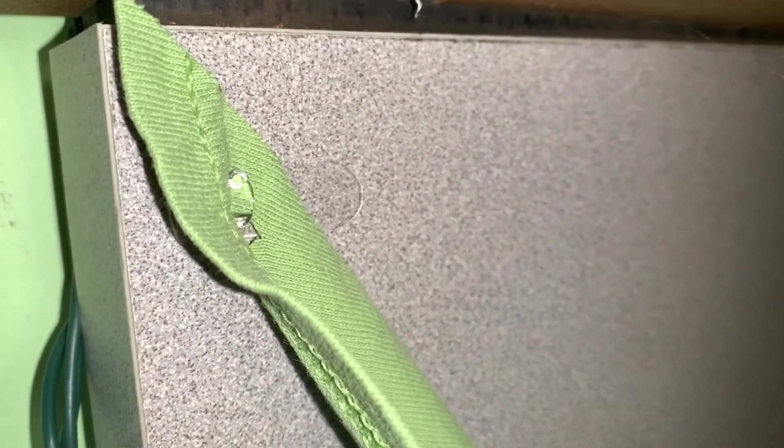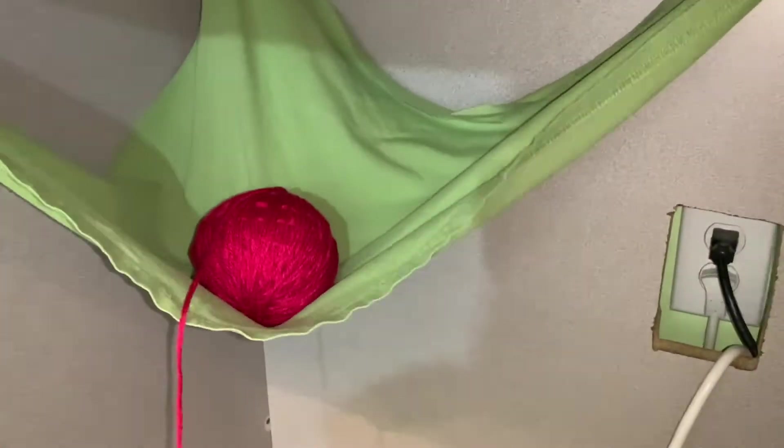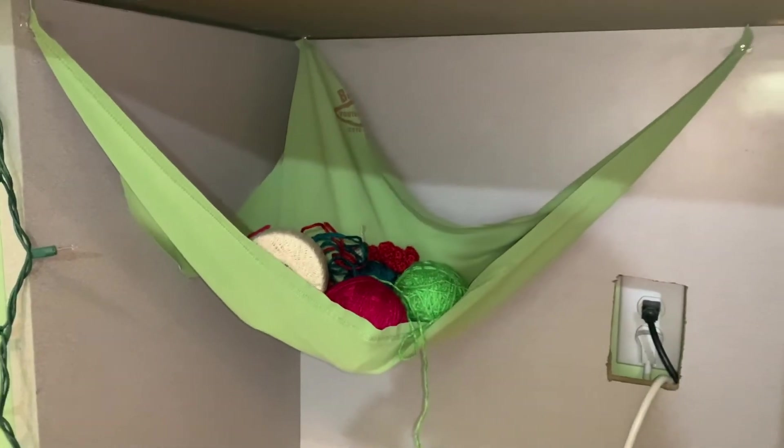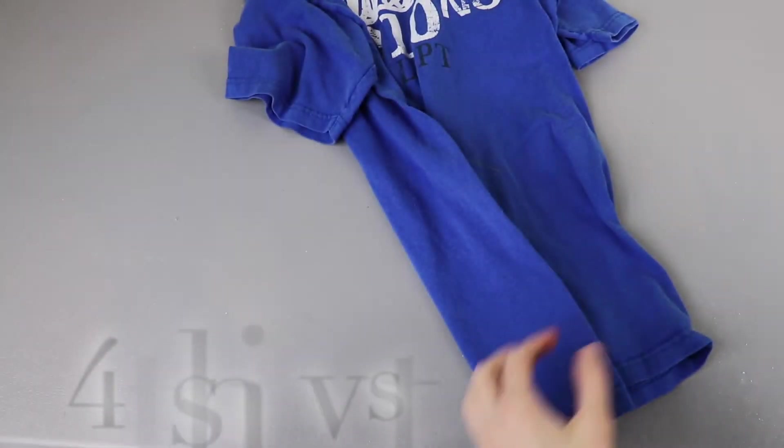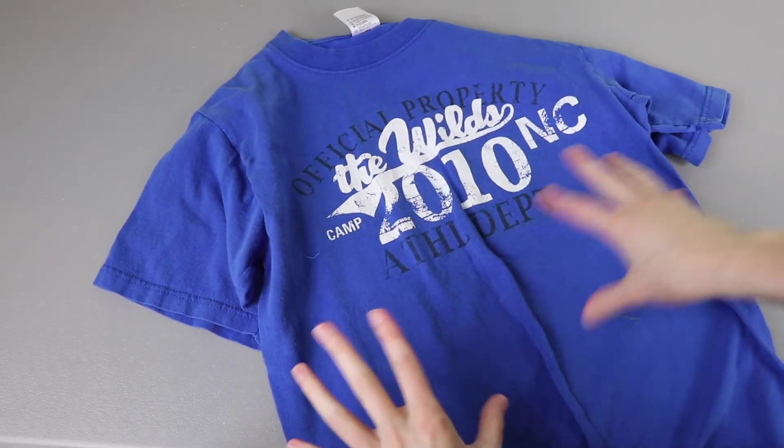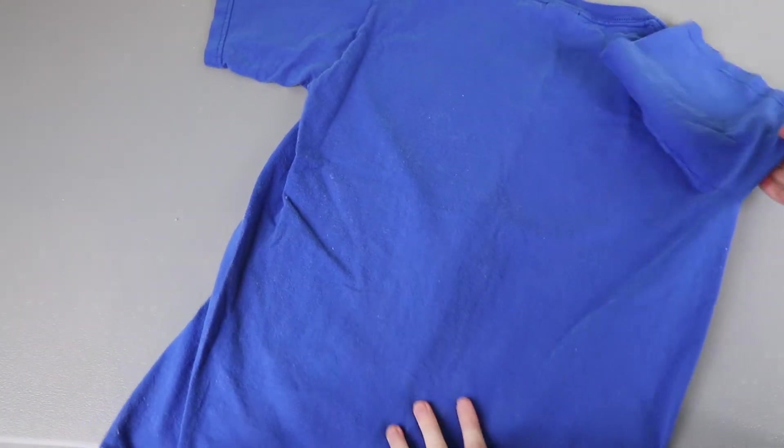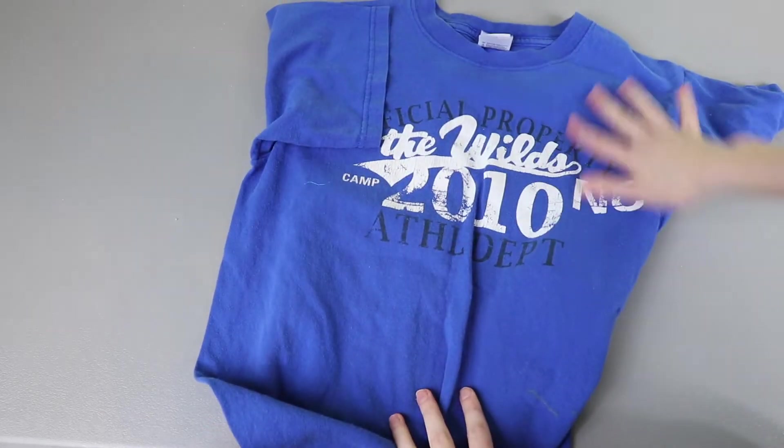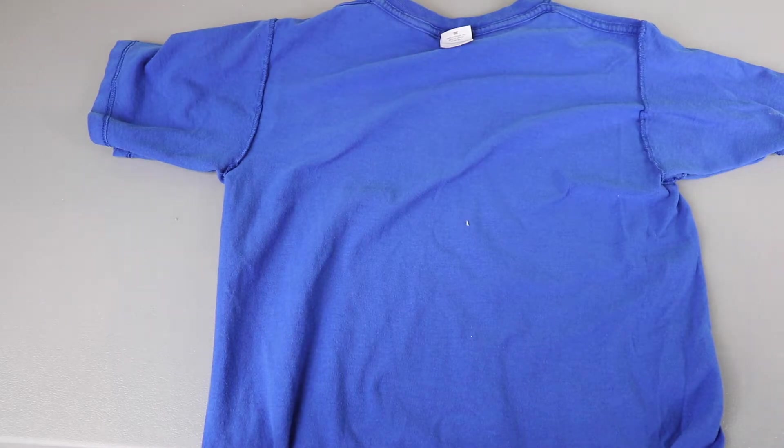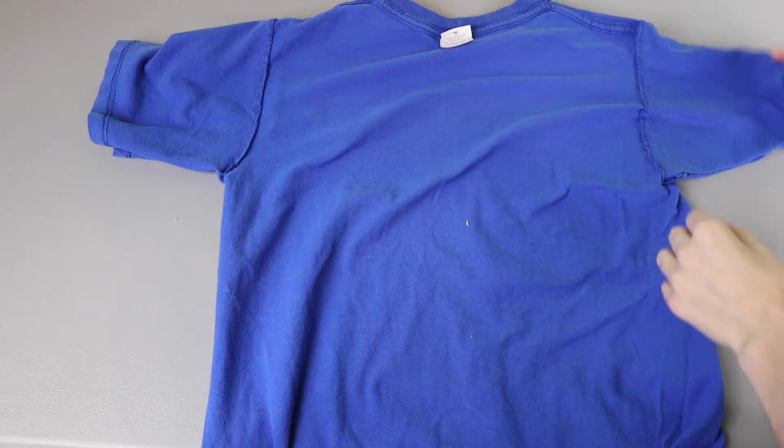For our next project we're going to make another thing that you can wear. We're going to make a t-shirt vest. Now this shirt obviously has some prints on it. You can do it with a shirt that has a print on it or if you don't want to see the print you can just wear it inside out so that way whatever design was on your t-shirt won't be seen. So I'm going to inside out mine. And this is a project I love because it is super simple. First thing we want to do is cut the sleeves off.